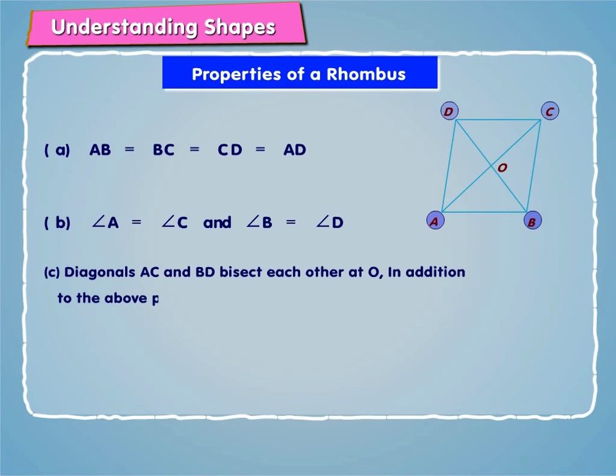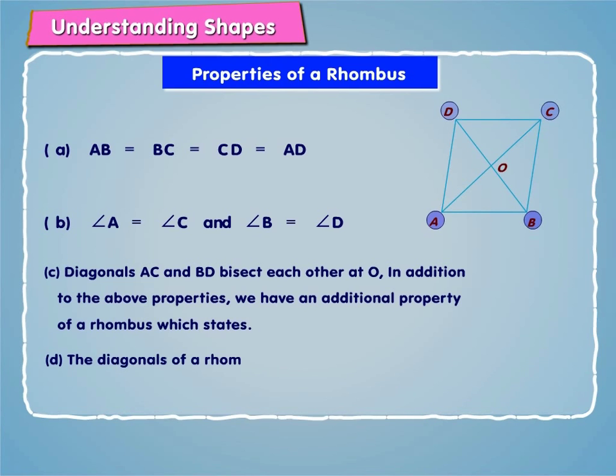In addition to the above properties, we have an additional property of a rhombus which states, the diagonals of a rhombus bisect each other at right angles.